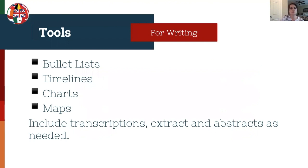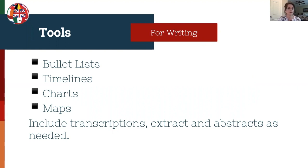There are also a few tools worth mentioning. Bullet lists are one of the most used tools — they help keep things organized. We also have time to mention timelines and charts, and maps are another great thing to use. Also, don't forget to include transcriptions, extracts, and abstracts as needed.